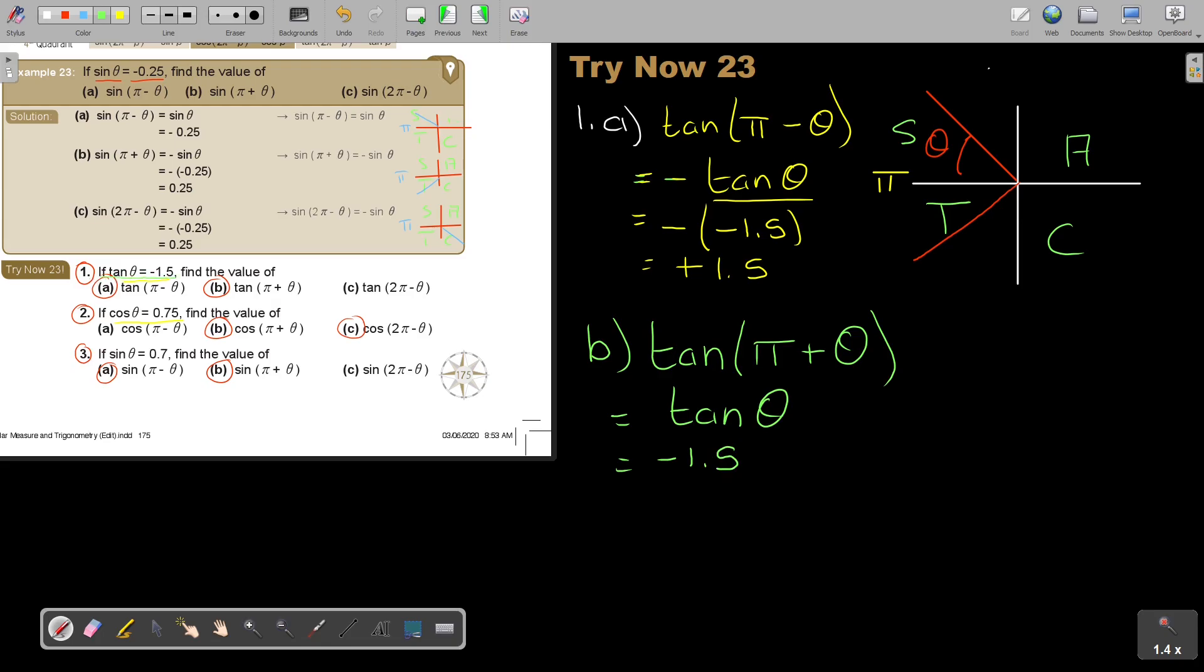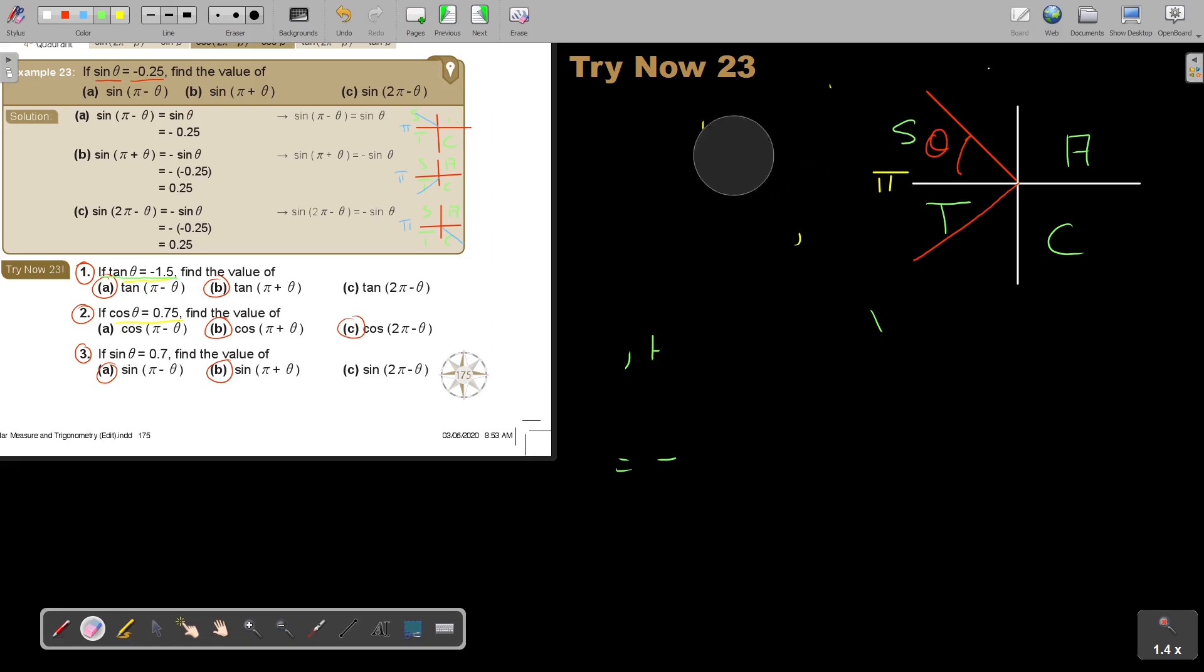So I'm going to say it's equal to positive tan theta, and I just substitute that tan theta. And now, tan theta is negative, so it's negative 1.5. So every time, focus there when you come to the substitution. That was number A.